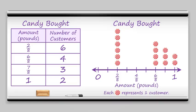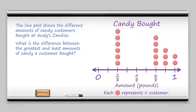Now let's see if we can answer a question about a line plot. In this example we want to know what is the difference between the greatest and least amounts of candy a customer bought. Since this is a number line we know that the greater values are to the right and the smaller values are to the left.